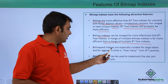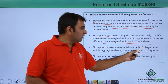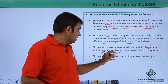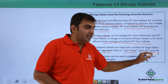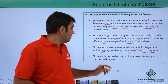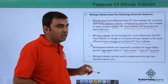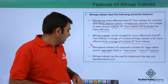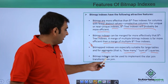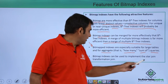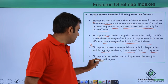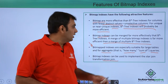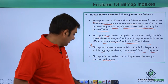Bitmap indexes are also excessively suitable for large tables and for aggregate queries such as SUM. They are also very good compared to B-tree indexes. Additionally, bitmap indexes can be used to implement star join and transformation joins, which is also a very good feature.